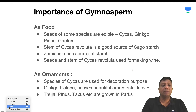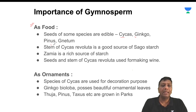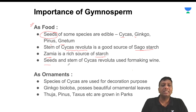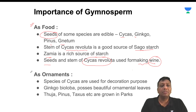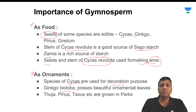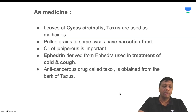Some gymnosperms are used for food: Cycas, Ginkgo, Pinus, and Gnetum — their seeds are edible. The stem of Cycas revoluta is a good source of sago starch. Zamia is a gymnosperm that is a richer source of starch. Seeds and stem of Cycas revoluta are used for making wines for alcoholic purposes. Various gymnosperms are used in gardens for ornamental purposes — Cycas for decoration, Ginkgo biloba for its beautiful ornamental leaves, and Thuja, Pinus, and Taxus are also grown in parks.